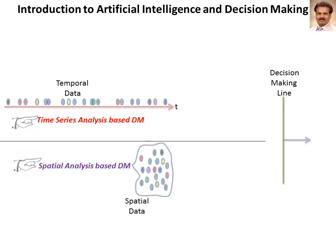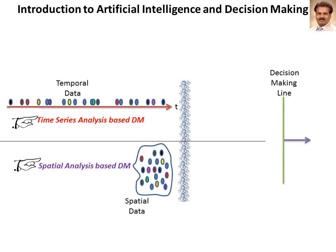When a decision is made using time series form of data, we say time series analysis based decision making. When a decision is made based on spatial form of data, we say spatial analysis based decision making. It is up to the decision maker to decide which type of data to use. In fact, there is a layer in between the decision line and available data.